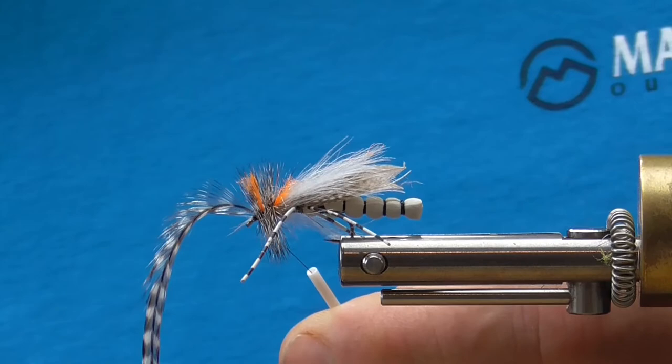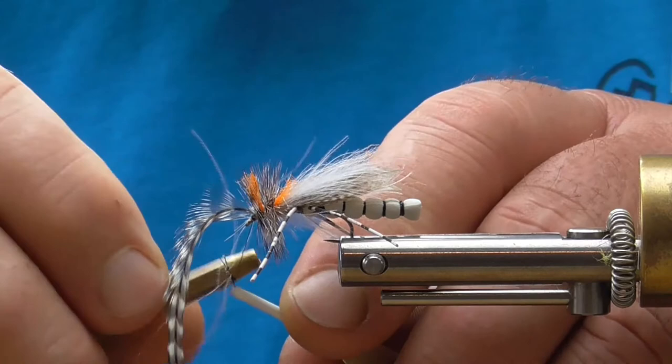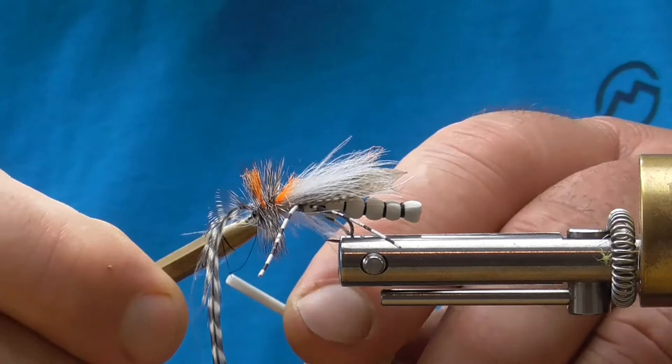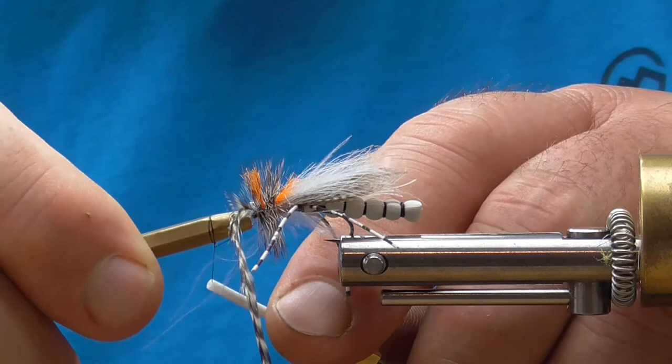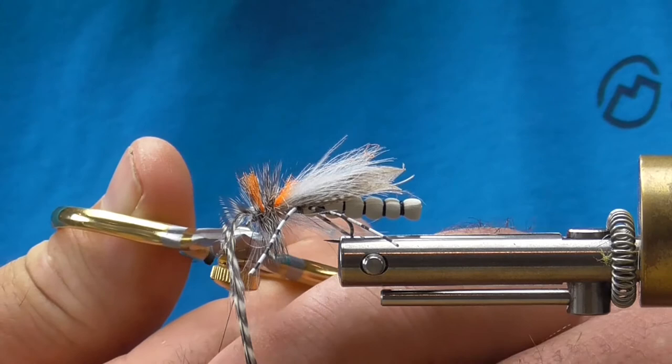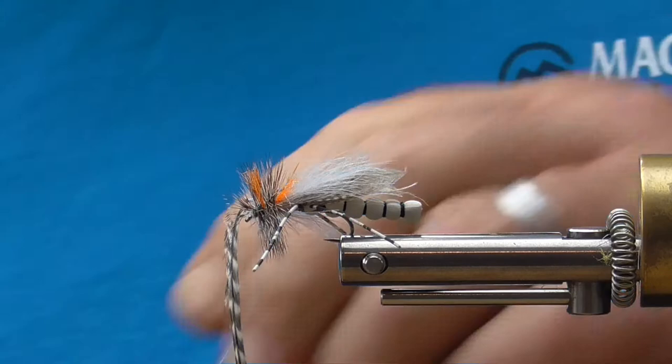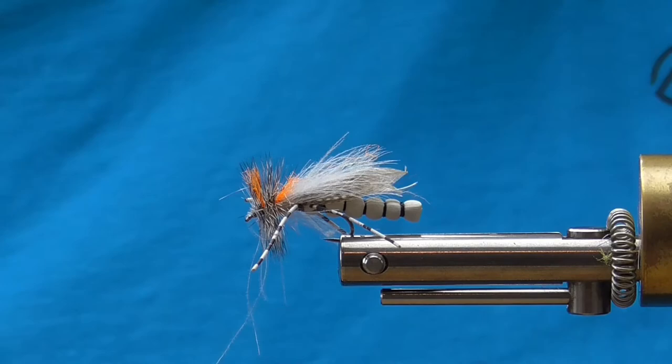And then I'm going to do a half hitch knot here with a half hitch tool. Again, I like to do that on my dries because I can push these fibers backwards as I secure that knot to really create a clear area in front of my eye. We'll go ahead and trim that. And we'll go ahead and trim our hackle. And that is the completed fly.